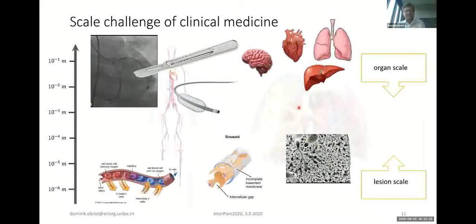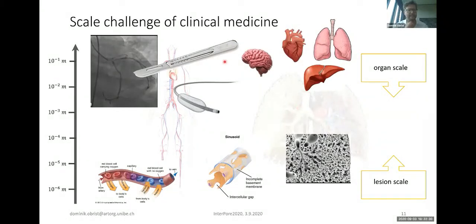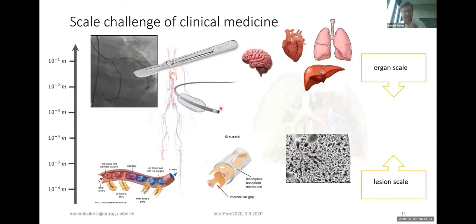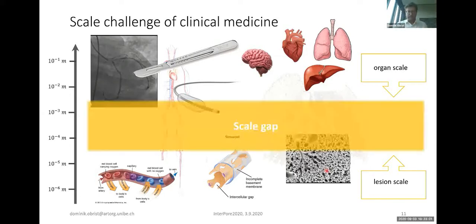Based on these two examples, I would like to postulate that there's a scale challenge in clinical medicine. The imaging modalities — fluoroscopy, CT, or MRI — are just not reaching the resolution needed to resolve these small-scale structures where lesions are actually happening. The same is true for surgical and interventional tools like catheters — there's a certain size limit. We have a scale gap between the lesion scale and what I would call the organ scale of about one to two orders of magnitude. To get better treatment and diagnosis, we need to overcome this scale gap somehow.